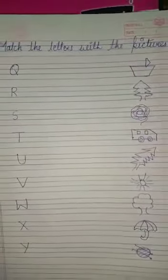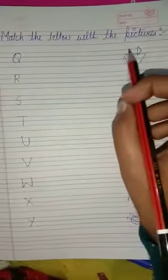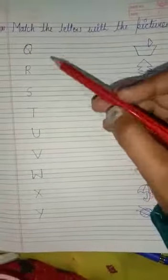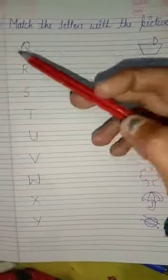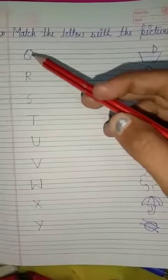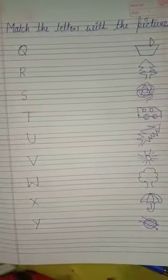Our second activity is match the letters with the pictures. Match the letters with the pictures. Here I have written some letters. And here I have drawn some pictures. So you have to match the correct letter with the correct pictures.